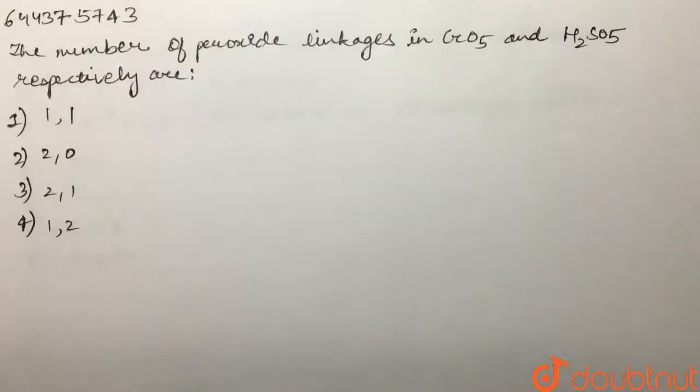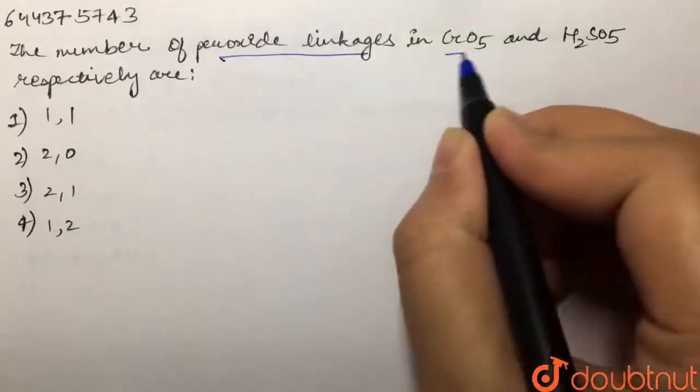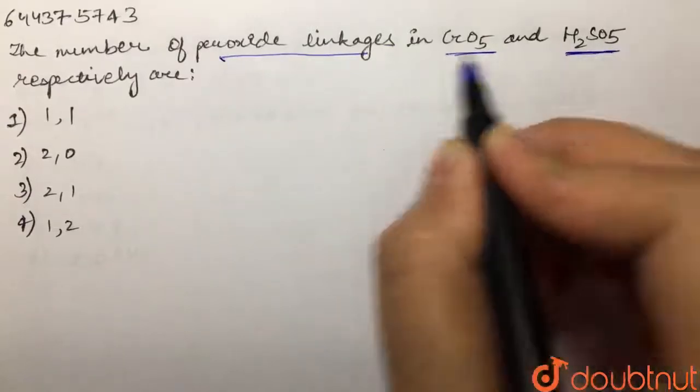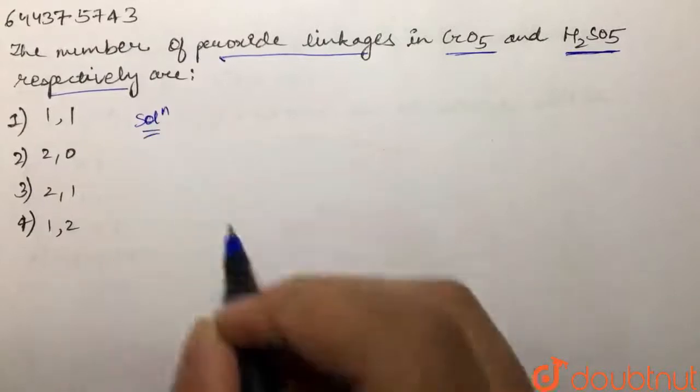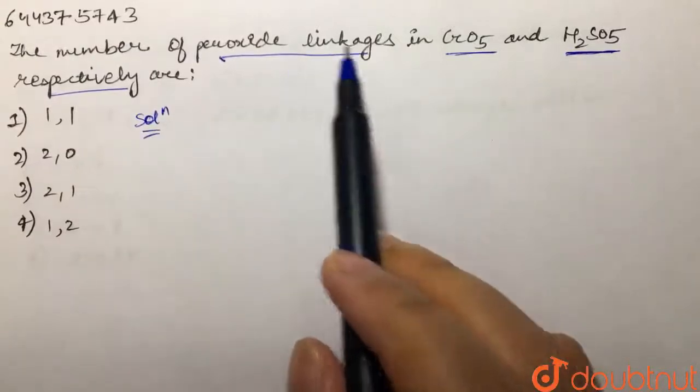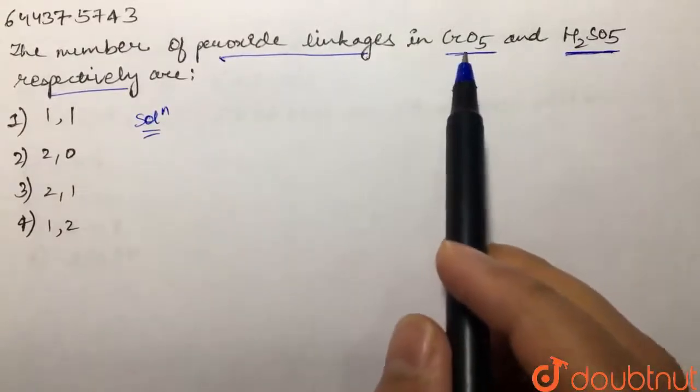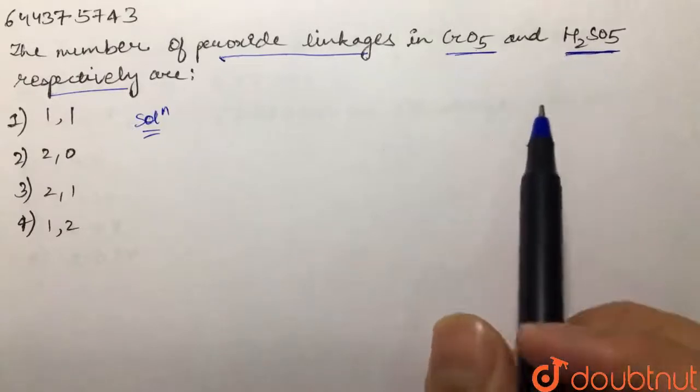Our question is: the number of peroxide linkages in CrO5 and H2SO5 respectively are what? Over here we are supposed to tell how many peroxide linkages are present in CrO5 and H2SO5 species.